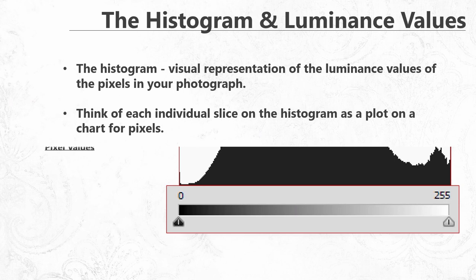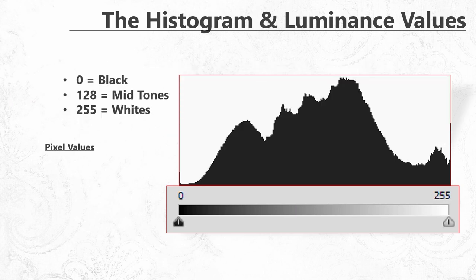The opposite of blue is yellow in the digital world. The histogram is really just a representation of luminance values in the pixels of your photograph. Think of each individual piece of the histogram as a slice or a plot. For every amount of pixels in your photograph, they get plotted on this bar graph, and this bar graph has 255 total plots that those pixels can fall into.